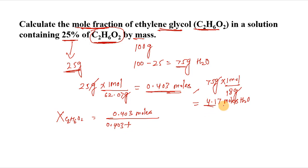Here we have moles of solvent, 4.17 moles. The same units will cancel out. Here we have 0.403 at the top. At the bottom we can add up these values: 4.17 and 0.403 gives us 4.573.